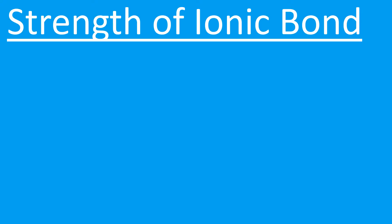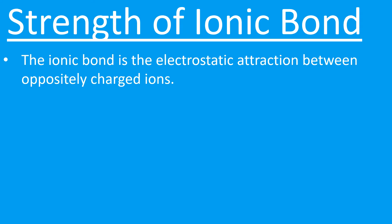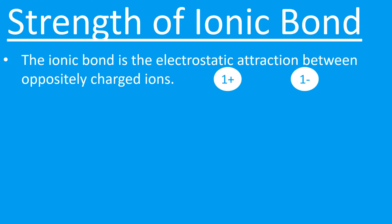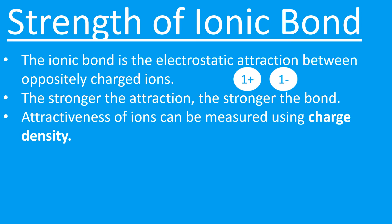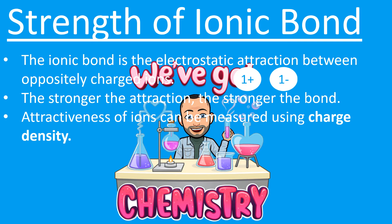Let's try and be logical about this. What is an ionic bond? We saw previously that an ionic bond is the electrostatic attraction between oppositely charged ions — they attract each other. The stronger that attraction, the stronger the bond. We can define or talk about the attractiveness using something called charge density.